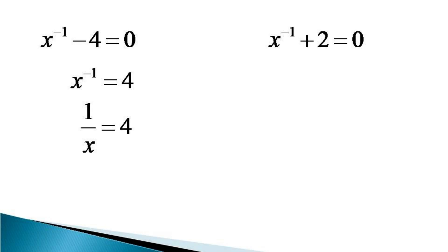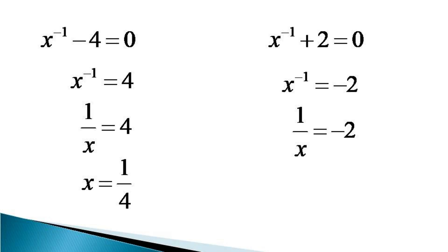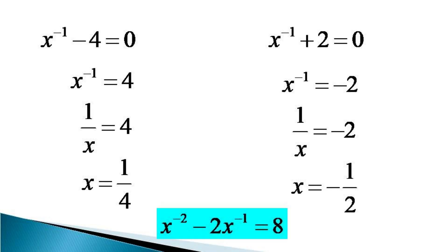The value of x from here comes as equal to 1 by 4. Considering the second equation, x raised to the power minus 1 plus 2, the value of x raised to the power minus 1 comes equal to minus 2, and this gives us 1 by x is equal to minus 2, or x can be written as equal to minus 1 by 2.